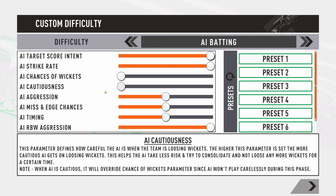AI cautiousness is connected to the chances of wickets slider. Push it to the right and the AI will be more cautious after losing wickets — they'll consolidate and play carefully. Push it to the left and the AI will take more risks, giving you more wickets. These two sliders work in combination: if chances of wickets is high and AI cautiousness is low, the AI will lose wickets quickly. Avoid having both at extreme right simultaneously.